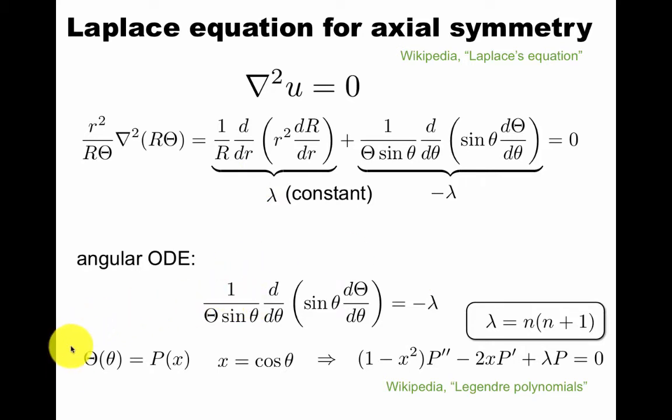One is this one equal to that, and one is this equal to this. This one is easy. The angular ODE looks like this. With this change of variables, x is cosine theta, we get this equation.